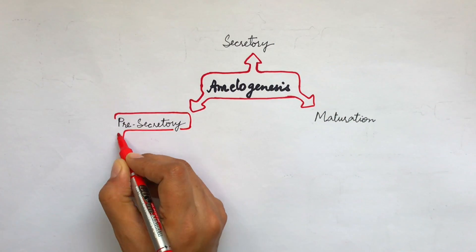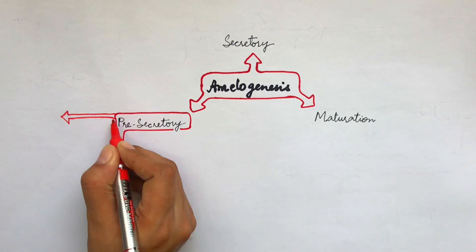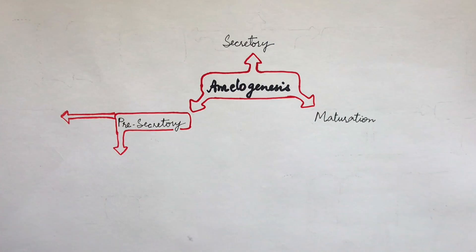In the pre-secretory stage, the ameloblasts prepare themselves to secrete the organic matrix of enamel and is further subdivided into two phases called the morphogenetic phase and the differentiation phase.